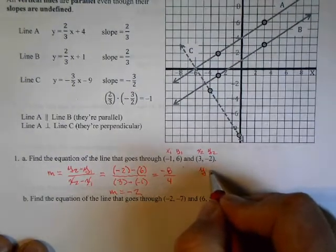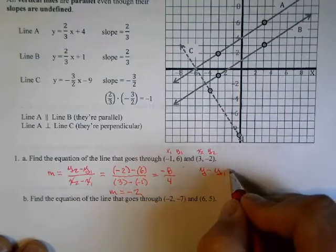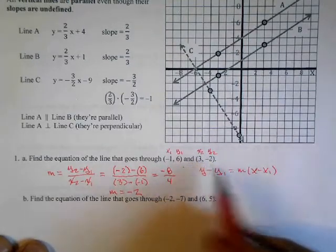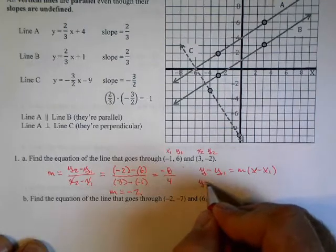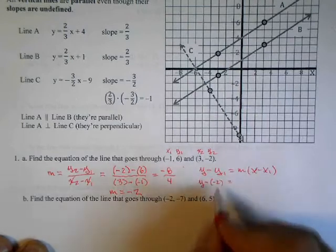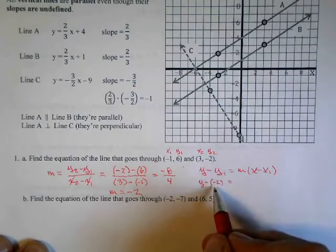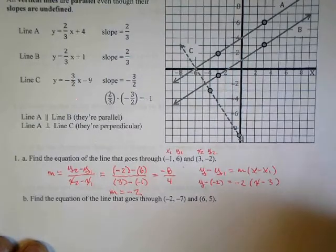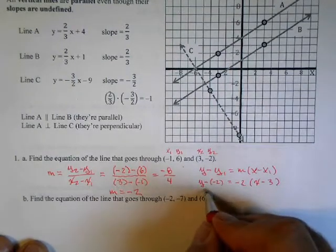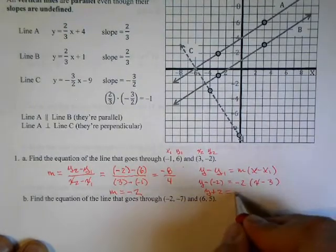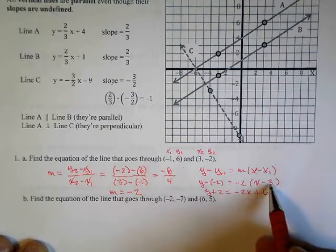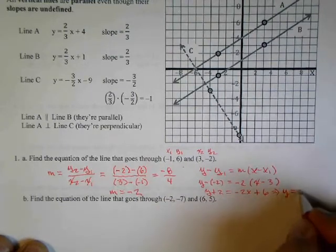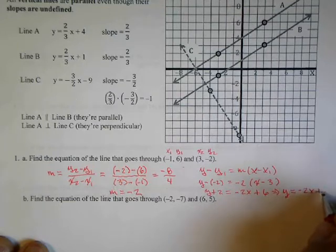Now I use the point-slope form: y minus y1 equals m times x minus x1. I'll pick the point (3, -2), so y subtract negative two equals negative two times x subtract three. I put the negative two in parentheses just to remind myself. Simplifying: y plus two equals negative two x plus six. Moving the two: y equals negative two x plus four. There's my answer.